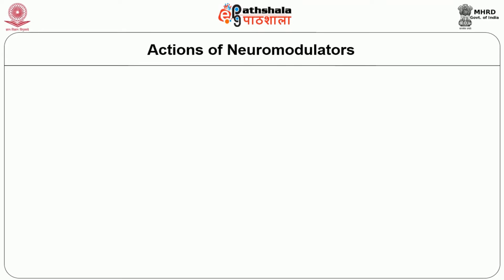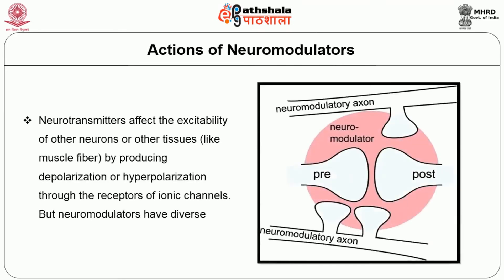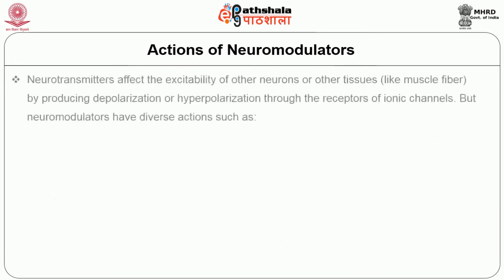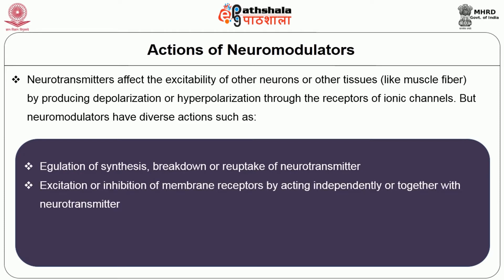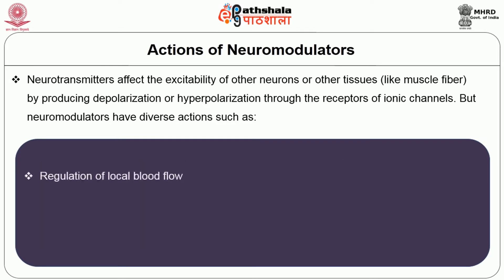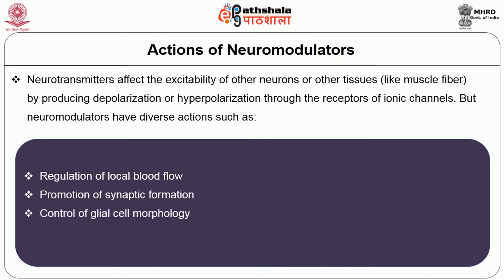Neuromodulators affect the excitability of other neurons or tissues by producing depolarization or hyperpolarization through receptors of ionic channels. Their diverse actions include: regulation of synthesis, breakdown, or reuptake of neurotransmitters; excitation or inhibition of membrane receptors by acting independently or together with neurotransmitters; control of gene expression; regulation of local blood flow; promotion of synaptic formation; control of glial cell morphology; and regulation of behavior.